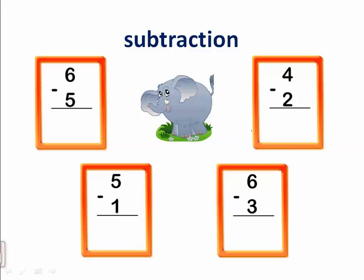Let's go to the next one. Five minus one. What do we mean by minus one? Minus one means take away one, and one is the smaller number. We will count after one till five: two, three, four, five. So five minus one equals four.